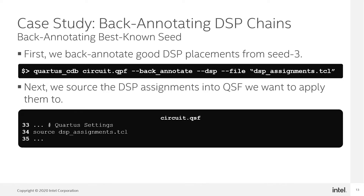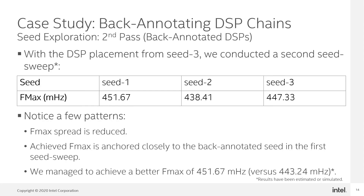The next step is to source the DSP assignments into the QSF we want to apply them to — in our case, the same Quartus project while we run a second seed sweep on it. With the DSP placement from Seed3 locked down, we ran a second pass seed sweep. This gave us better timing results on average. We can notice a few patterns: the fmax spread is reduced, and the distribution of achieved fmax is anchored very closely to Seed3 which was backannotated in the first seed sweep.